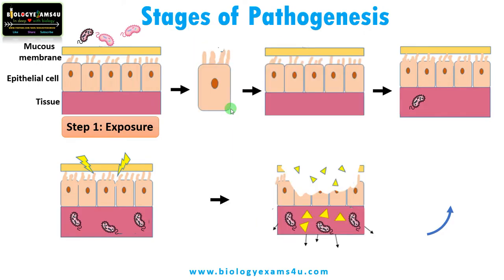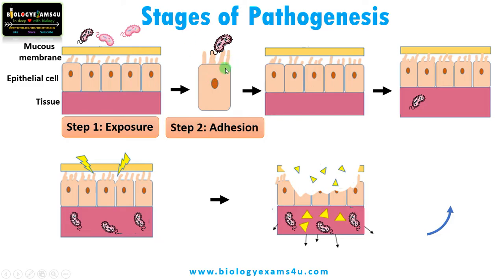The second step is adhesion. Adhesion is very important as innate defense mechanisms of our body — like the peristaltic movement of our gut, urination, sweating, and tears — all these remove the pathogen from the system. So adhesion is a critical step for the pathogen in causing a disease. The pathogen adheres to the cell by means of flagella and pili in the case of bacteria, and this involves proteins or carbohydrate components like adhesins that help attach to the cell surface.